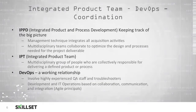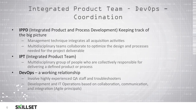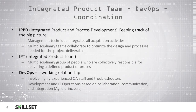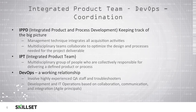You'll generally have a team approach to producing software or other products. The Integrated Product and Process Development Team, or IPPD, is responsible for keeping track of the big picture. Management is responsible for integrating all acquisition activities, and these teams are multidisciplinary and collaborate to optimize the process needed to deliver the project on time. Your Integrated Product Team, or IPT, is a multidisciplinary group of people responsible for delivering a defined product or process. Your DevOps team has highly experienced troubleshooters and quality assurance staff members and works to make sure that development and IT operations are based on collaboration, integration, and communication, which are Agile principles.